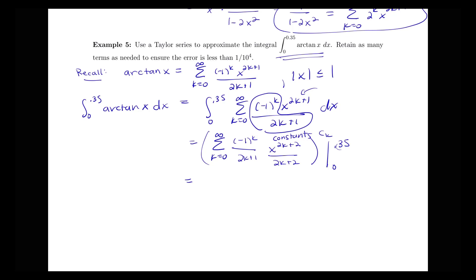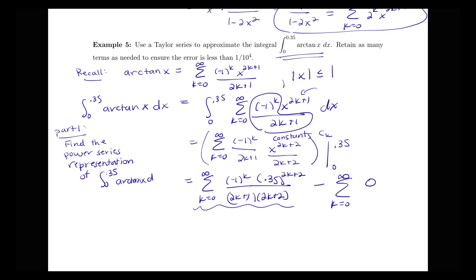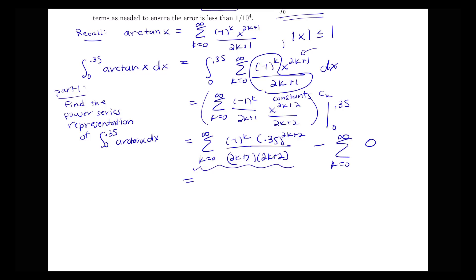We plug in 0.35 for x first, giving the sum from k equals 0 to infinity of negative 1 to the k over 2k plus 1 times 2k plus 2, times 0.35 to the 2k plus 2. Plugging in 0 gives zero, so we just have that sum. So part one was to find the power series representation of the definite integral from 0 to 0.35 of arctan(x), and now we want to approximate it.